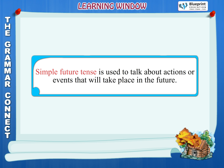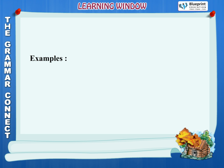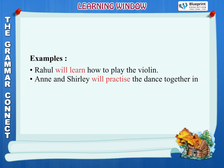Simple Future Tense is used to talk about actions or events that will take place in the future. Examples: Rahul will learn how to play the violin. Anne and Shirley will practice the dance together in the afternoon.